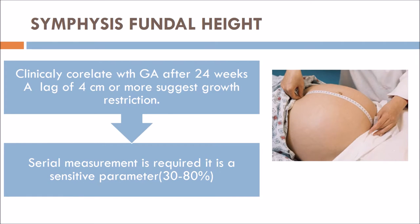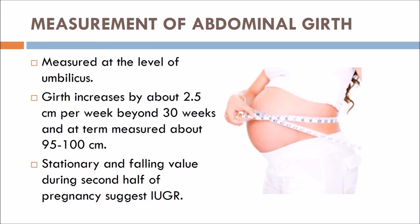Symphysis fundal height is used to clinically correlate gestational age after 24 weeks. A lag of 4 cm or more suggests growth restriction. Serial measurement is required; it is a sensitive parameter in 30 to 80 percent of cases. Abdominal girth is measured at the level of the umbilicus — it increases by about 2.5 cm per week beyond 30 weeks and at term measures about 95 to 100 cm. A stationary or falling value during the second half of pregnancy suggests IUGR.